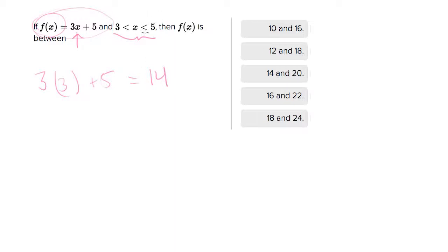And let's plug in the upper bound, the 5. So that would be 3 times 5 plus 5 is 15 plus 5 is 20. So you'd be tempted to just pick the third answer choice and be done. And that is the correct answer here.